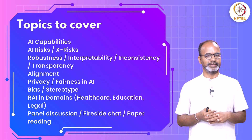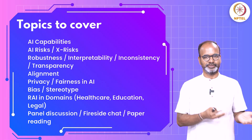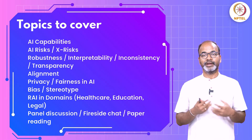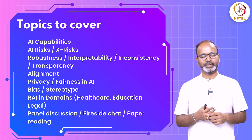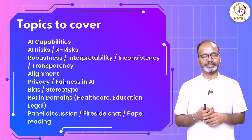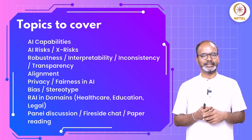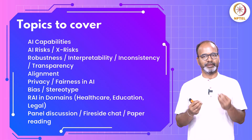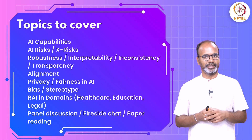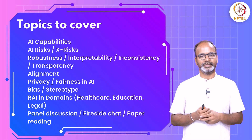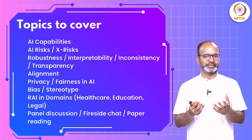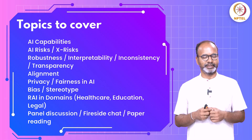The next module is privacy and fairness in AI. As seen in the earlier examples, there are a lot of fairness questions that show up, as well as privacy questions — for instance, where personal information was being produced by language models. We'll also look at bias and stereotype in detail: gender bias, geographical bias, and the various biases present in language models.